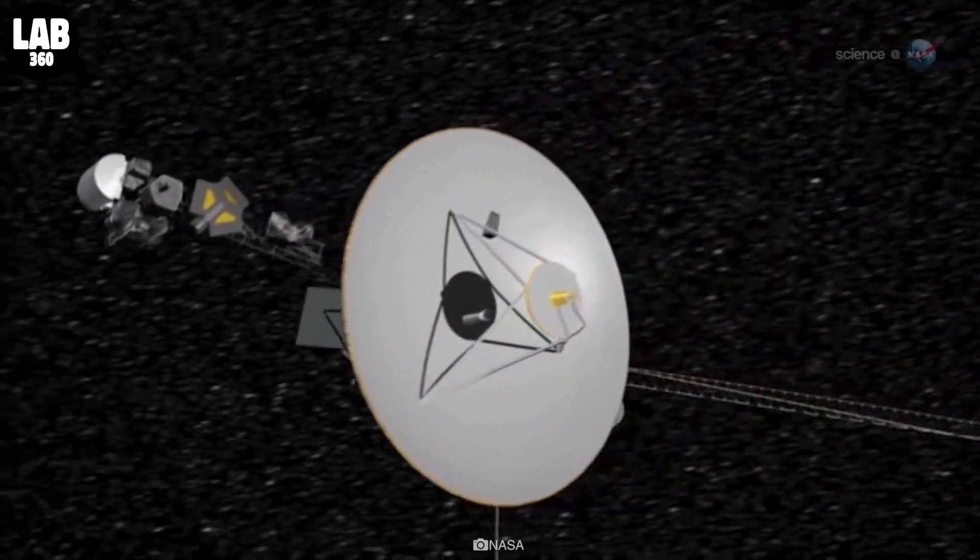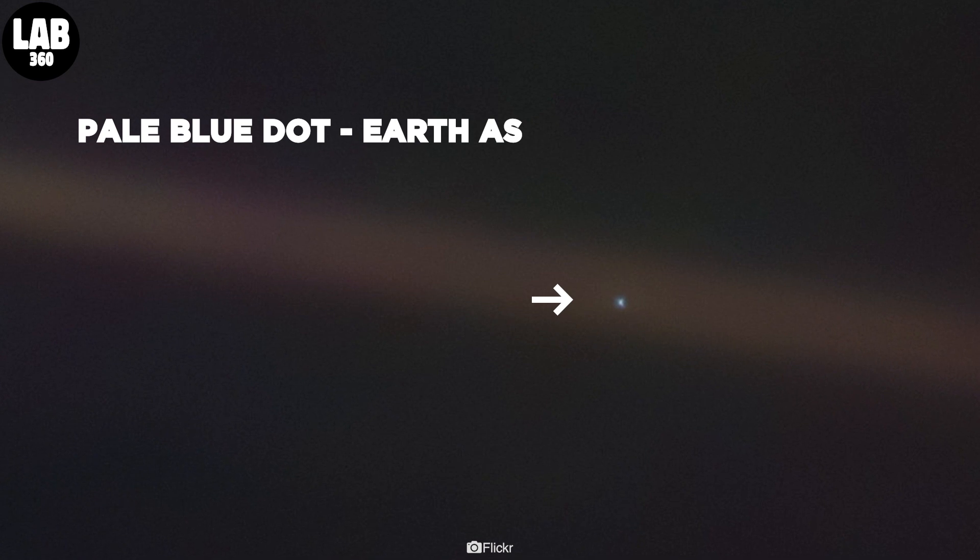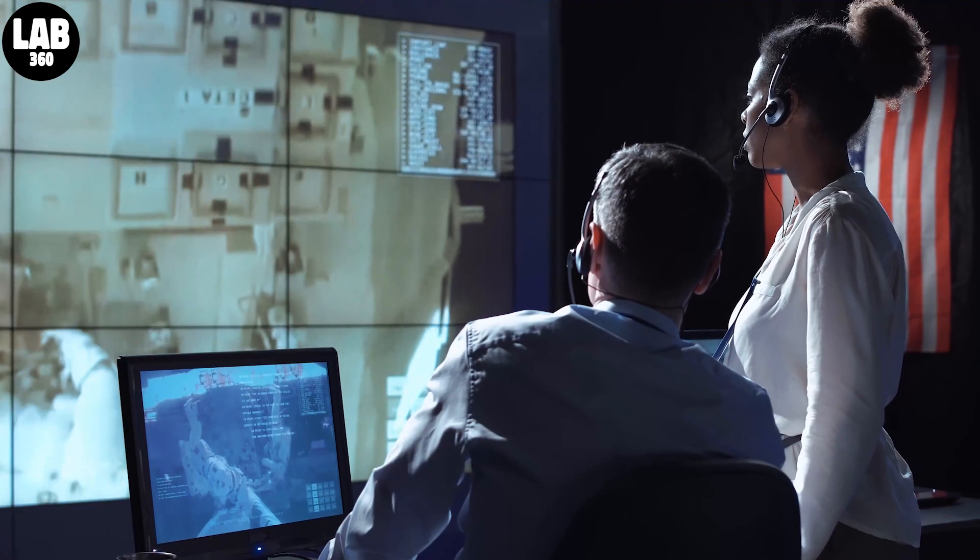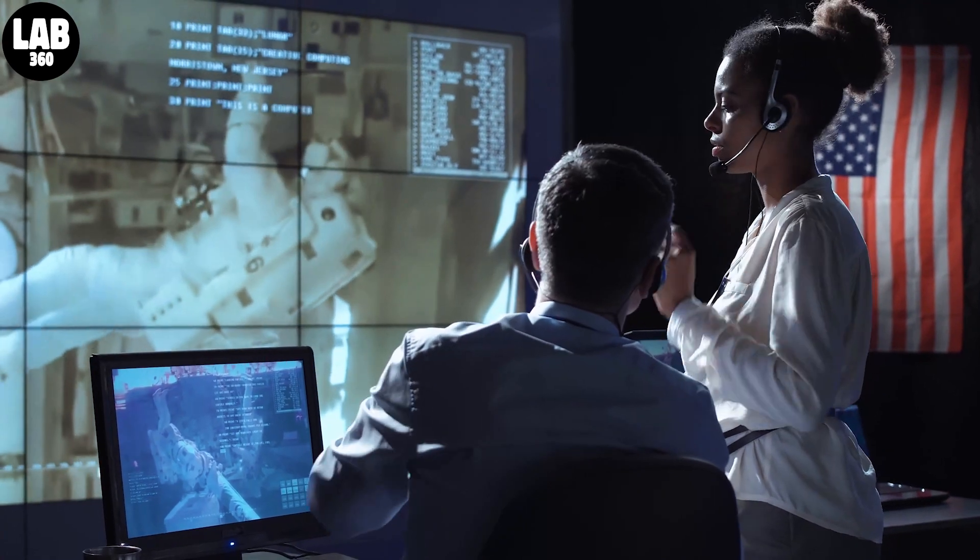Voyager 1 continues to operate well, despite its advanced age and 14.5 billion mile distance from Earth. And it can receive and execute commands sent from NASA, as well as gather and send back science data.